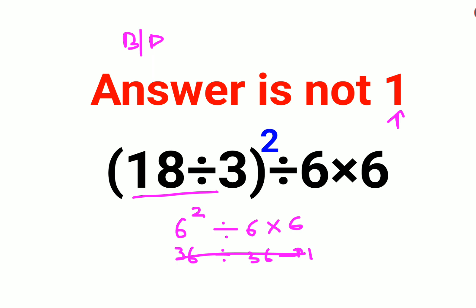Now why is that wrong? First, a very important thing is we need to convert the indices first. So this becomes 36 divided by 6 into 6. Now in BODMAS and PEMDAS, in both cases division and multiplication hold equal precedence, so you just go from left to right.